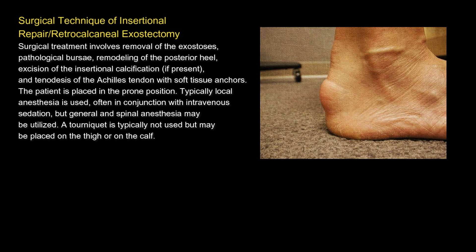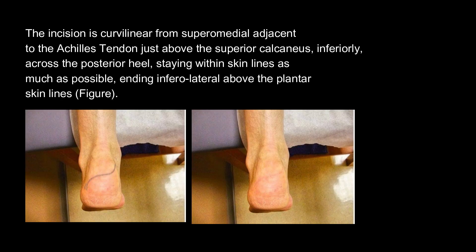Surgical technique of insertional repair and retrocalcaneal exostectomy. Surgical treatment involves removal of the exostoses, pathological bursae, remodeling of the posterior heel, excision of the insertional calcification if present, and tenodesis of the Achilles tendon with soft tissue anchors. The patient is placed in the prone position. Typically local anesthesia is used, often in conjunction with intravenous sedation, but general and spinal anesthesia may be utilized. A tourniquet is typically not used but may be placed on the thigh or calf. The incision is curvilinear from superomedial adjacent to the Achilles tendon just above the superior calcaneus, inferiorly across the posterior heel, staying within skin lines as much as possible, ending inferolaterally above the plantar skin lines.